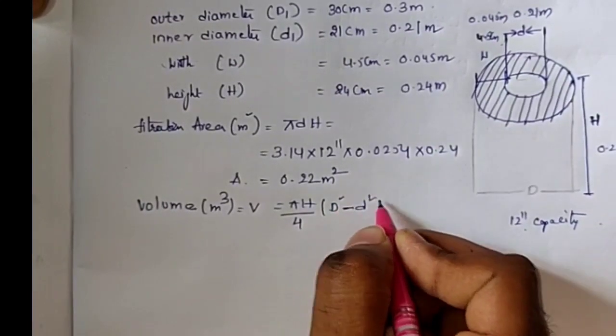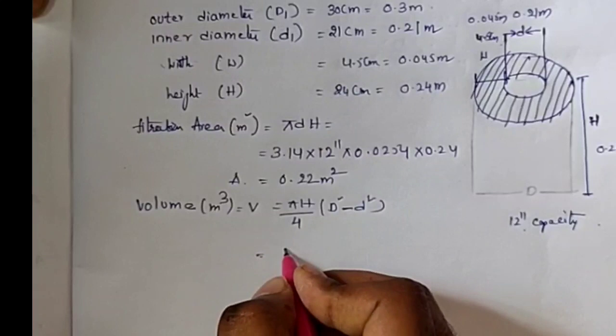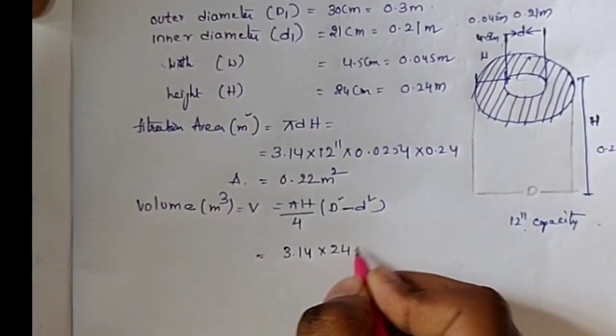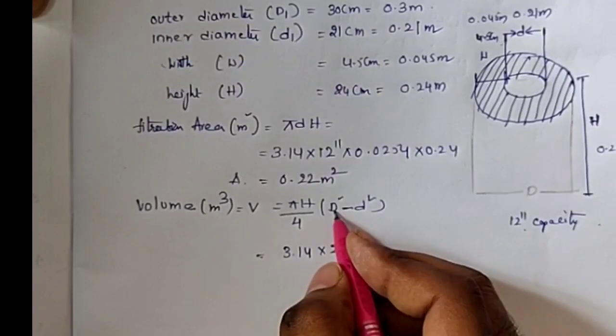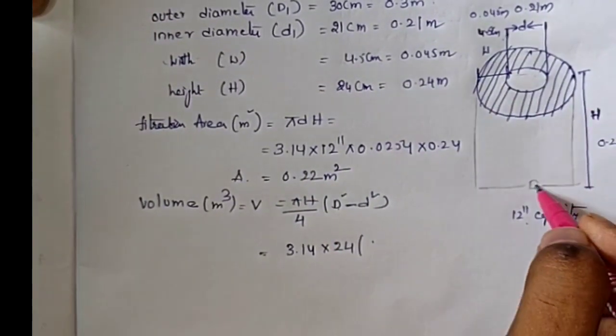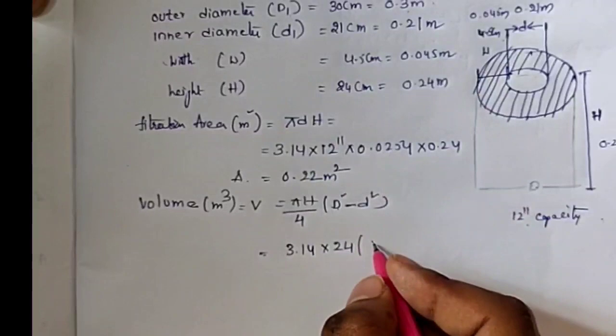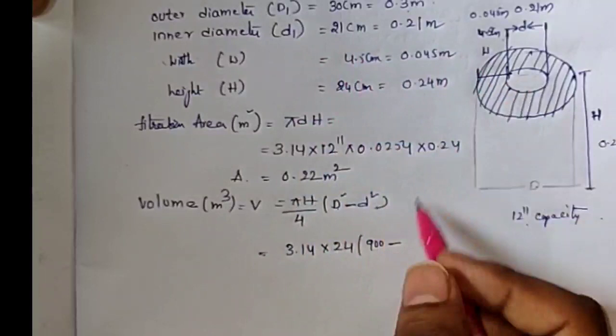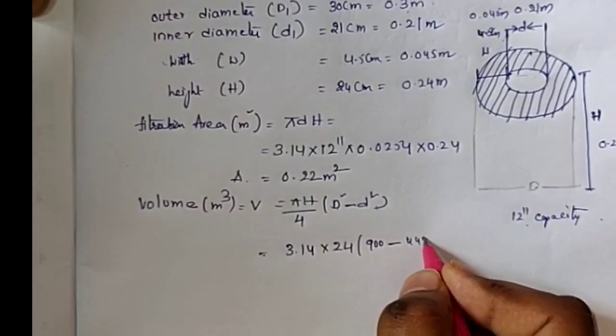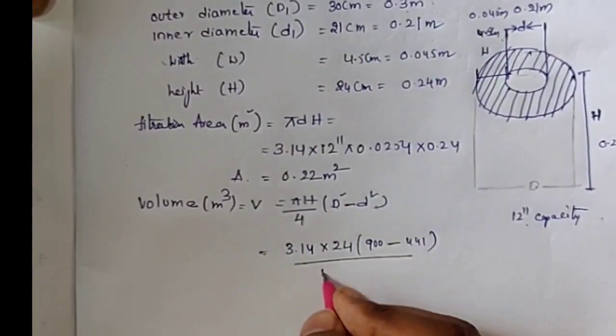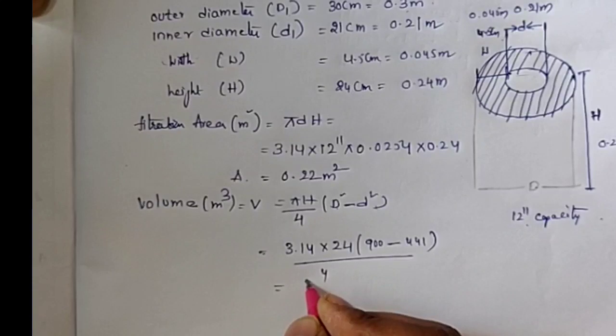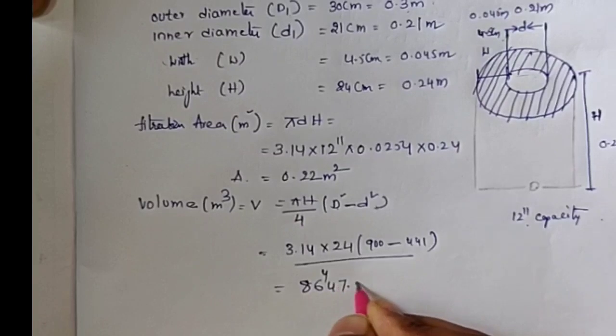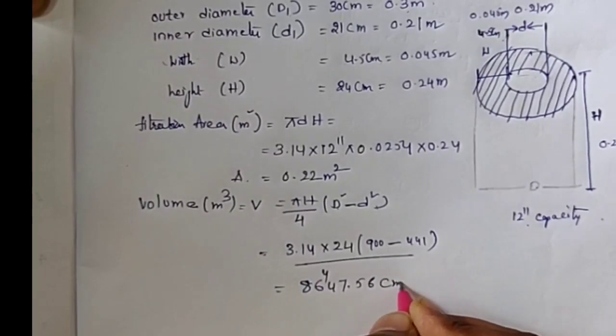V equals 3.14 × 24, and D is 30 squared minus small d squared, which is 21 squared = 441, divided by 4. After solving this, you will get 8647.56 cm³.